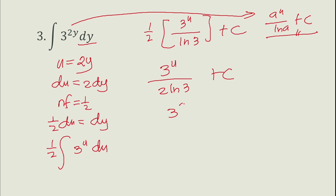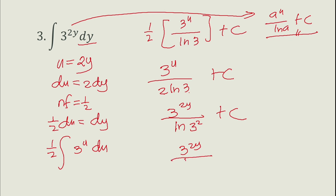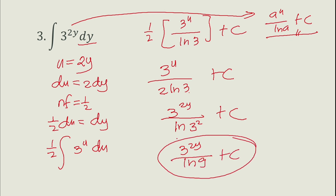Substituting back u = 2y and applying the laws of logarithms — ln(3²) equals ln(9) — the final answer is 3^(2y) over ln(9) plus c.